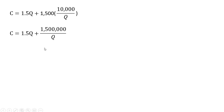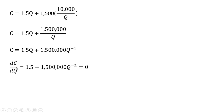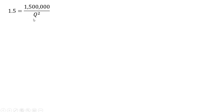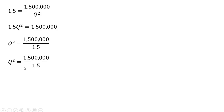Our goal is to minimize this total cost equation with respect to Q. Rewriting, we bring Q up into the numerator with a minus one exponent. Taking the derivative with respect to Q and setting it equal to zero, then rearranging — bringing Q to the negative second power into the denominator, cross-multiplying, and dividing through by 1.5 — we get Q squared equals one million. Taking the square root gives Q equals 1,000.